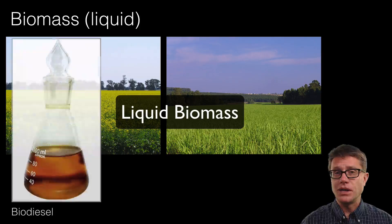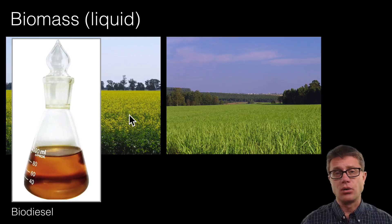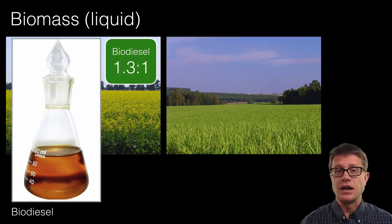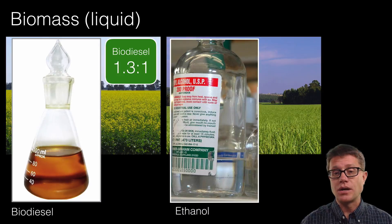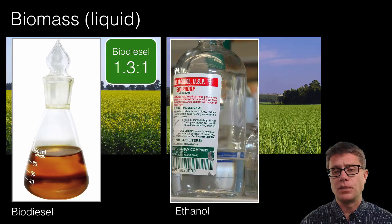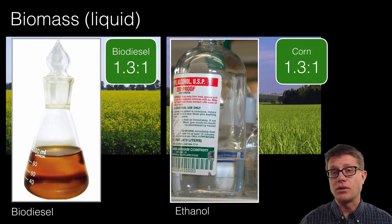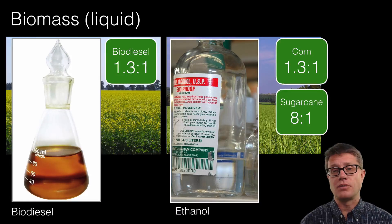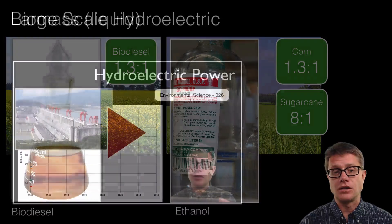Two big areas of liquid biomass are biodiesel and ethanol. Biodiesel is made by refining oils like canola or soybean, and its energy returned over energy invested ratio is very small. For ethanol, we ferment sugars — corn ethanol is a 1.3-to-1 ratio. Sugarcane in the US is about 3-to-1, but in Brazil it reaches up to 8-to-1. So both the crop type and where it is grown significantly affect how much energy we get back.